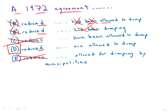That brings us to D: 'reduce the amount that the municipalities are allowed to dump.' Presumably this law is still in effect — these municipalities are still dumping phosphates into the Great Lakes, and the law reduces the amount they are allowed to dump right now. This is clear and direct, makes perfect sense in context, and is by far the best answer.